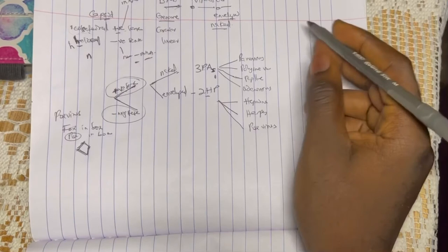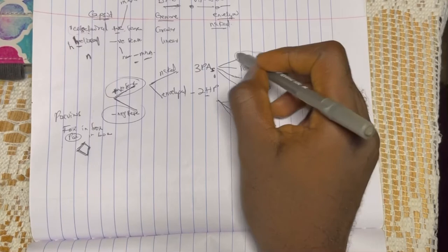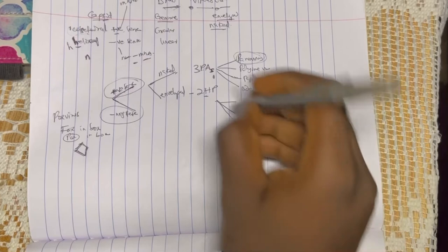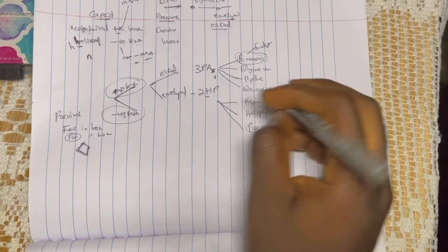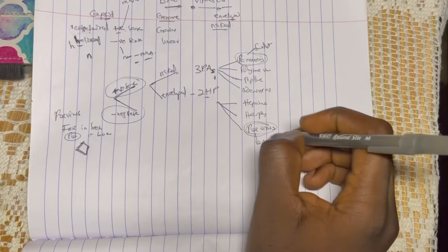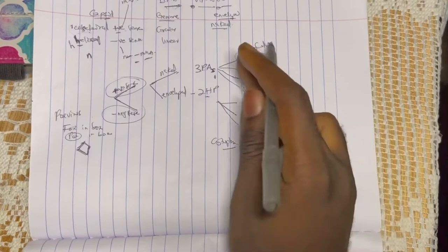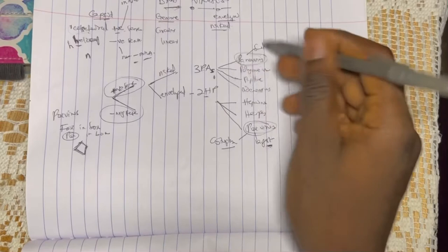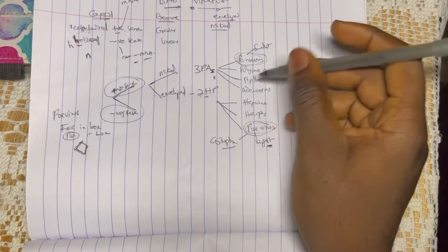One thing to note here: parvo virus specifically comes first among the three Ps, and pox virus is also last. This is the smallest and this is the largest. You remember we said pox in the box doesn't fit the icosahedral shape, and the fact that it's large. All the DNA viruses replicate in the nucleus except pox virus, which replicates in the cytoplasm, because it's too big to go into the nucleus. The arrangement is pretty key. Parvo virus comes first and pox is the last.